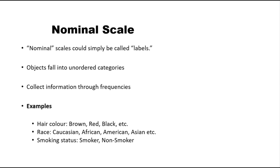Similarly, race and religion are also examples of nominal scale. There is no order involved; they are just categories. Another example could be smoking status — smokers and non-smokers are just labelings with no order involved, which is why it is also an example of nominal scale. In environmental science, the name of the site we are going to include in our study can also be an example of nominal scale.